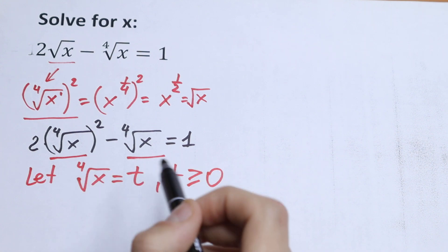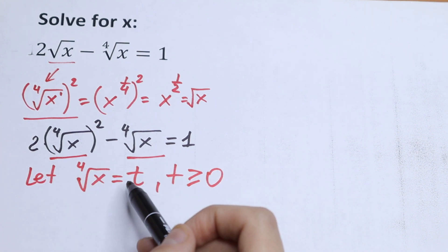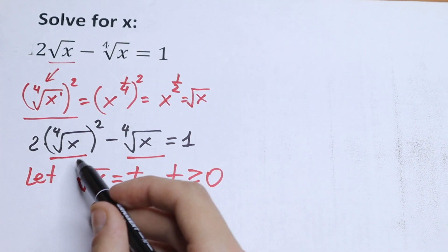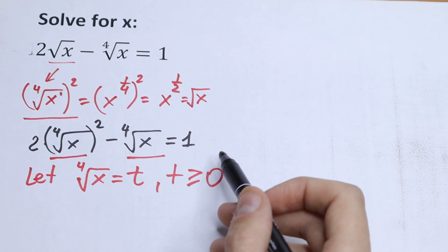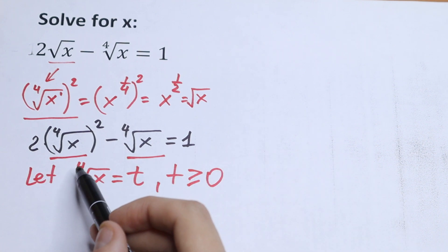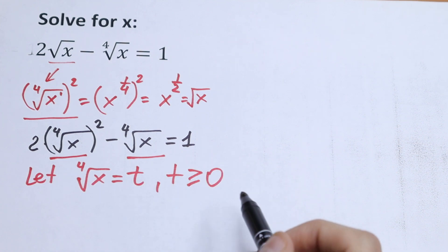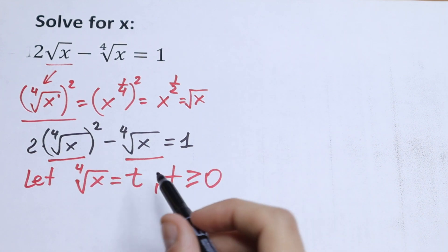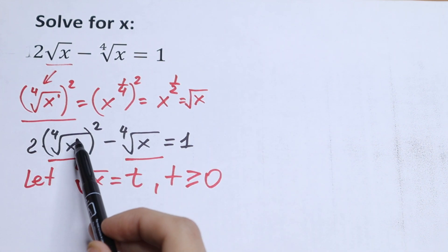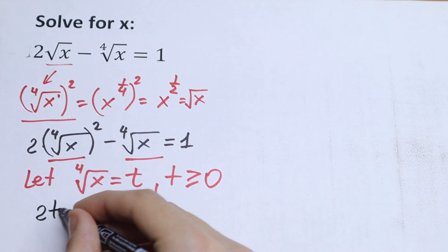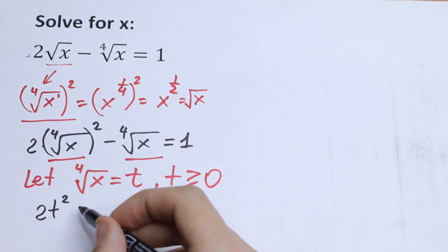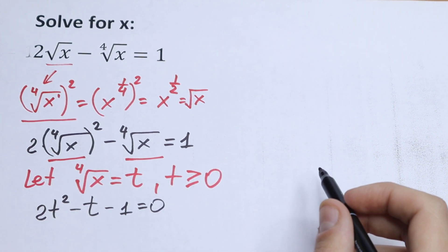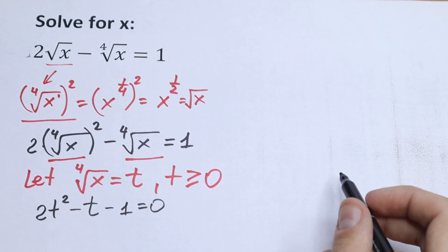If we take the fourth root of x, t will always be positive. If we had a cube root instead, t could be negative or zero — but since we have a fourth root, t must be non-negative. With this substitution, we get the quadratic equation 2t² minus t minus 1 equals 0.